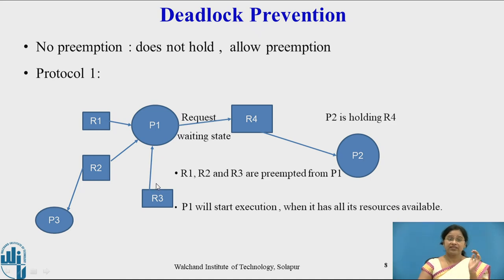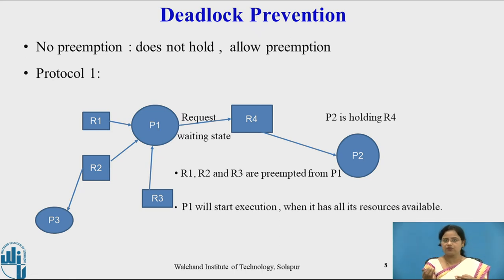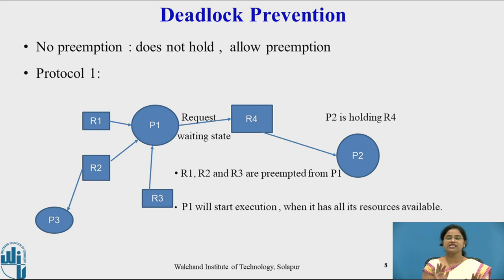Protocol 1 for no preemption states: if a process requests a new resource and that resource is not available, then preempt all resources currently held by that process. So P1 must release R1, R2, and R3, and P1 will resume execution only when all resources — R1, R2, R3, and R4 — are available and allocated to it. In the next video, we will see Protocol 2 and continue with the deadlock prevention mechanism.